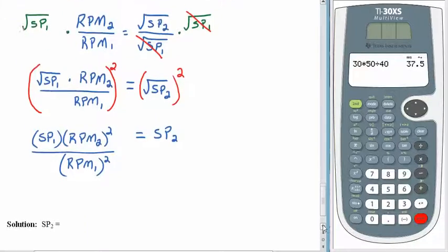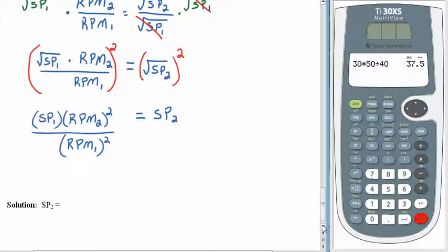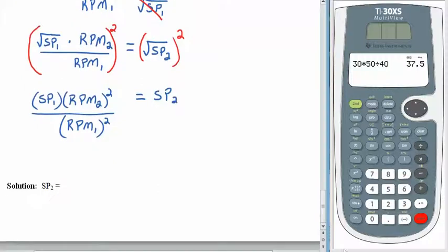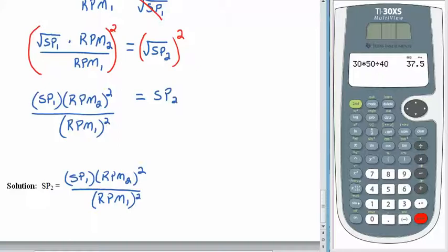There we go. That's it. That is the end. The formula SP2 has been isolated. And so now we just turn it around so it looks a little nicer. SP2 is SP1 multiplied by RPM2 squared and divided by RPM1 also squared. And that's it. The end. So practice rearranging some formulas. And we will talk to you later. Have a great day. Bye bye.